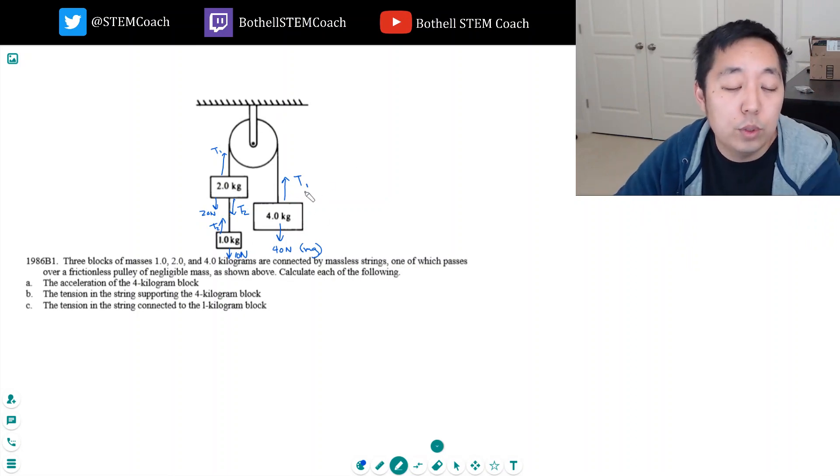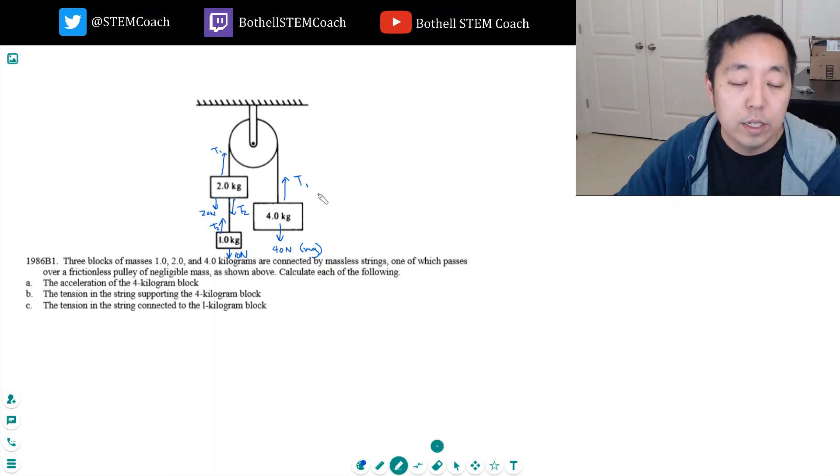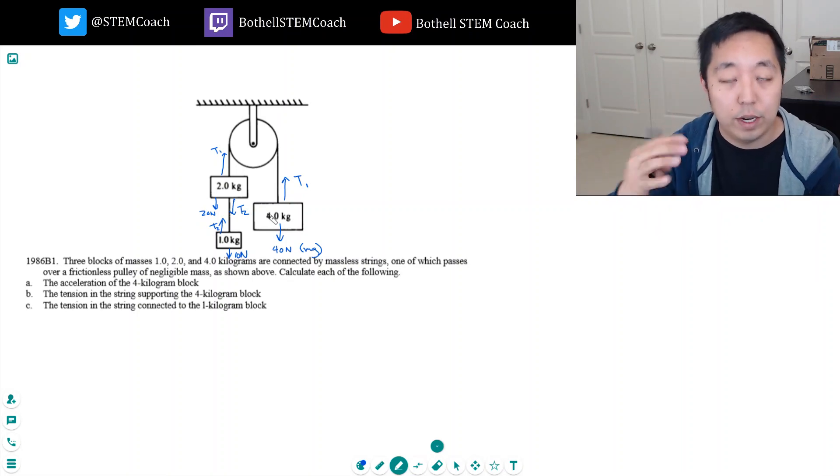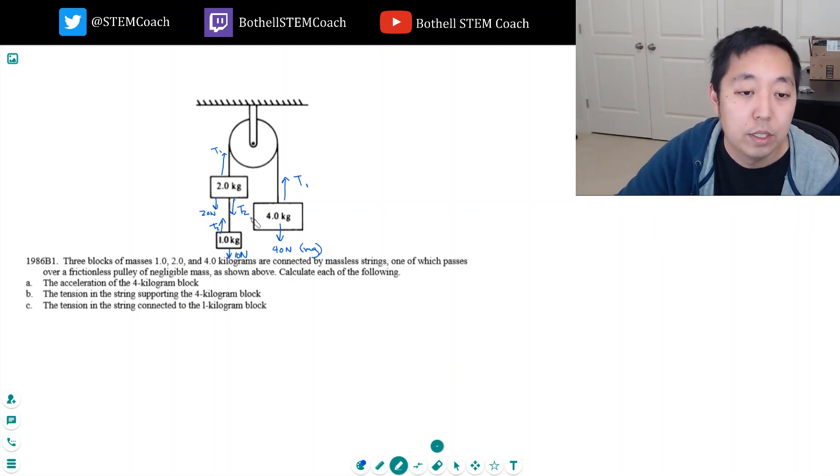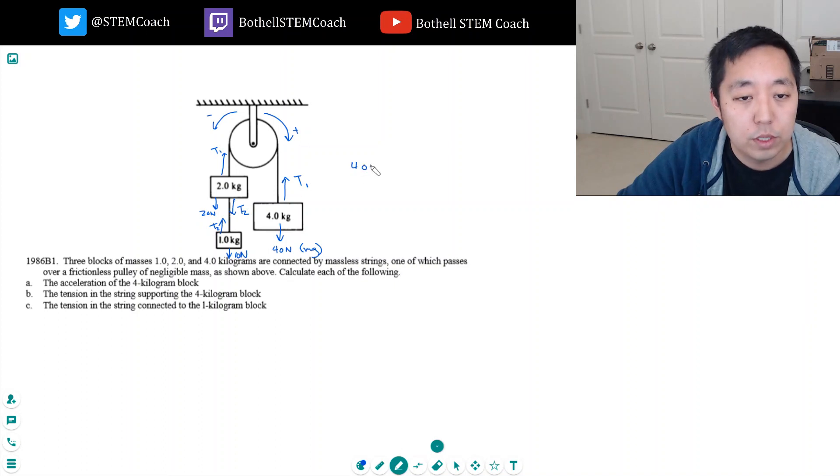Now, the most direct way is just simply for each free body diagram and net force I set up the equations. Now all of them have to, whatever the acceleration is, they all have to have the same acceleration because they all move together, unless the rope breaks or anything. So for this guy, 40 newtons minus T1 is his net force, and that has to equal 4 kilogram times A, which is the acceleration of this block. So this is net force equals ma. I don't know what T1 is and I don't know A, so I can't solve for A.